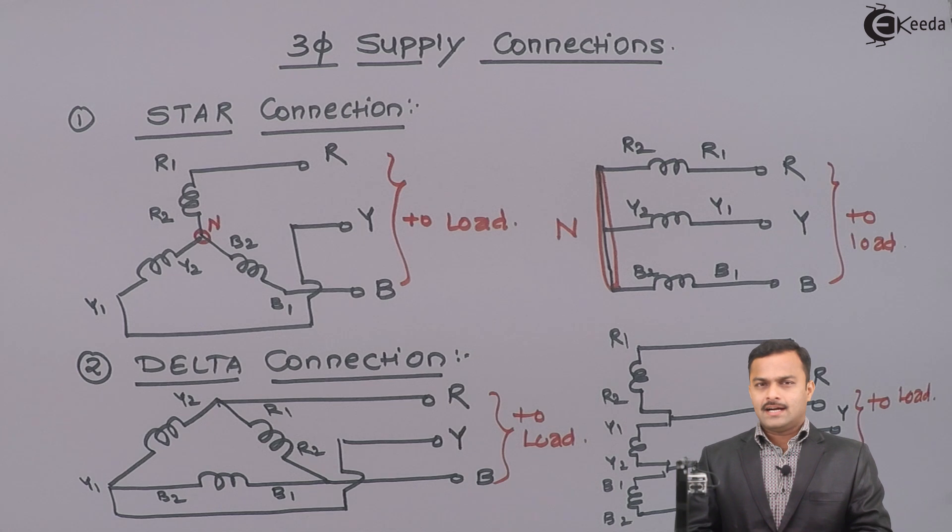The star and delta, we have already learned in DC circuit. So, whatever concepts of star and delta we have learned over there is applicable over here, as far as the structure is concerned.